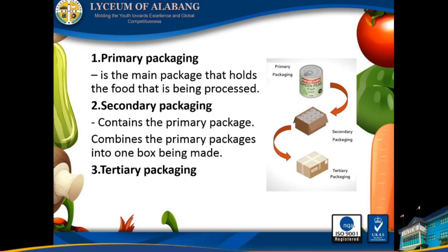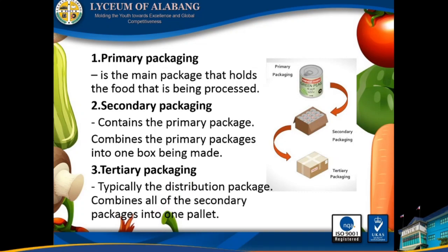Last, number three, tertiary packaging. Typically, the distribution package combines all the secondary packages into one pallet. Tertiary packaging is typically not seen by consumers since it is usually removed by retailers before products are displayed for sale. Examples include brown cardboard boxes, wood pallets, and shrink wraps.